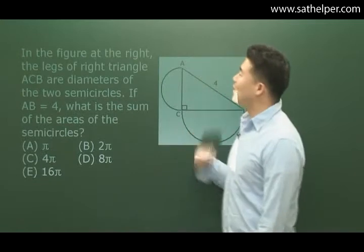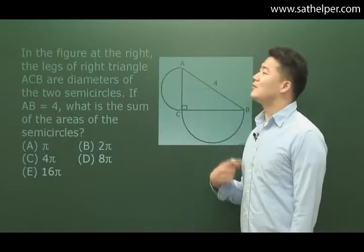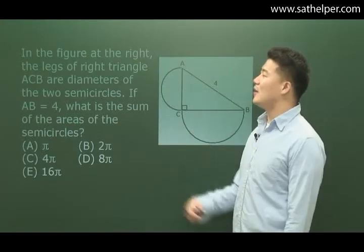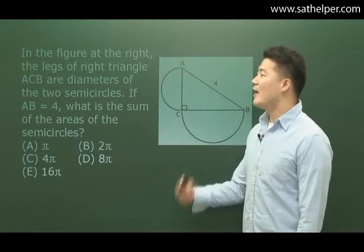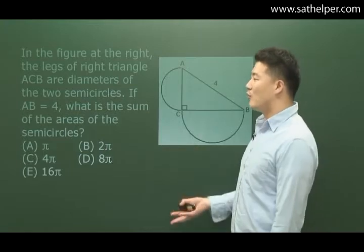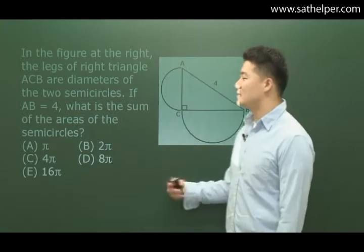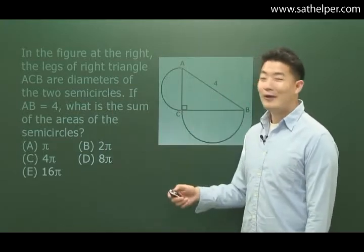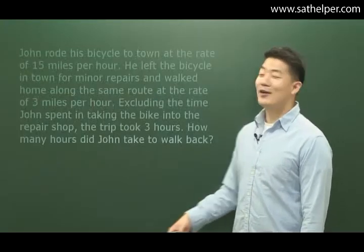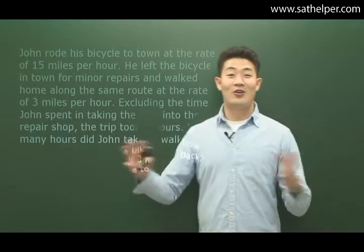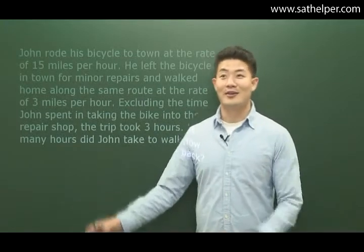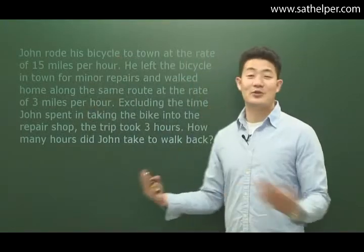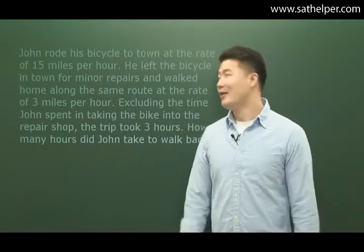Next one: in the figure at the right, the legs of a right triangle ACB are diameters of two semicircles. If AB is equal to 4, what is the sum of the areas of the semicircles, etc.? And then we have long, long problems that take up the whole screen as well.